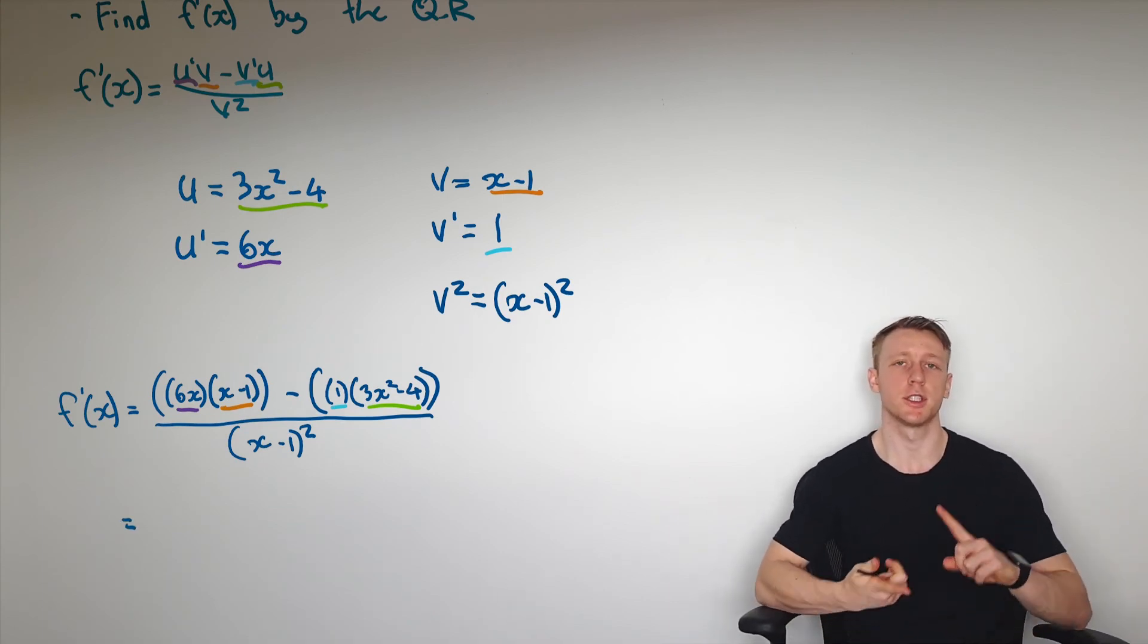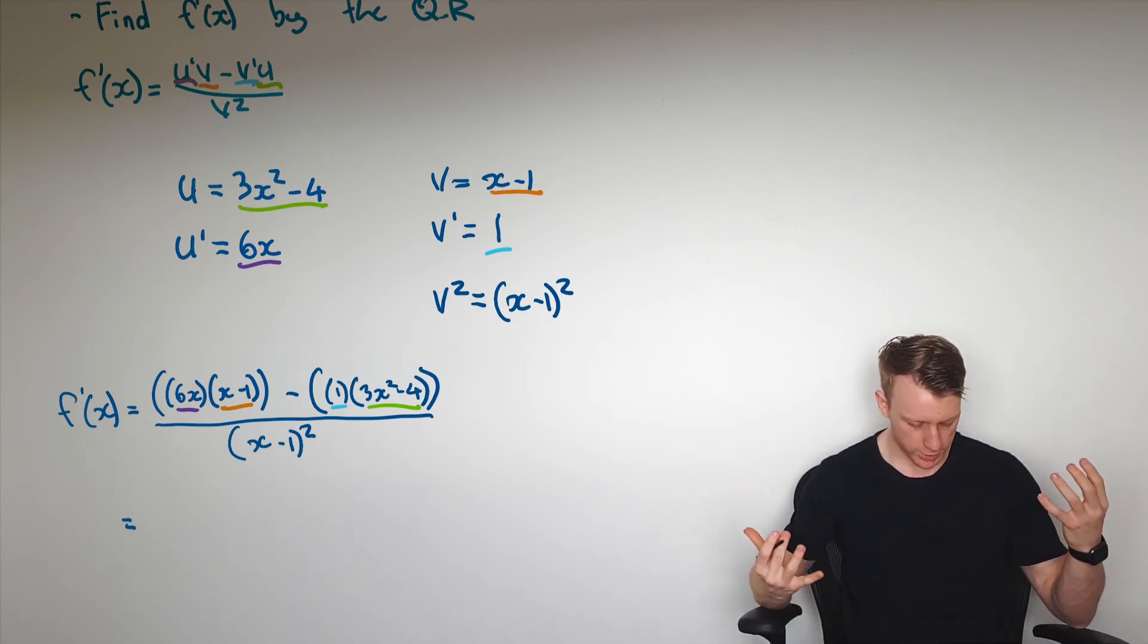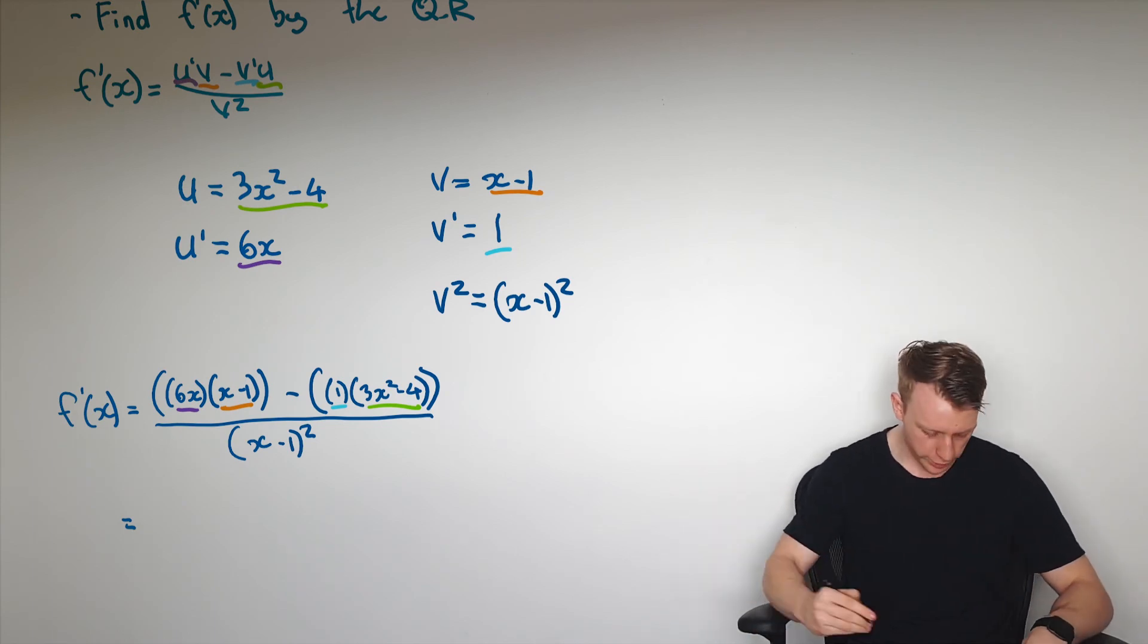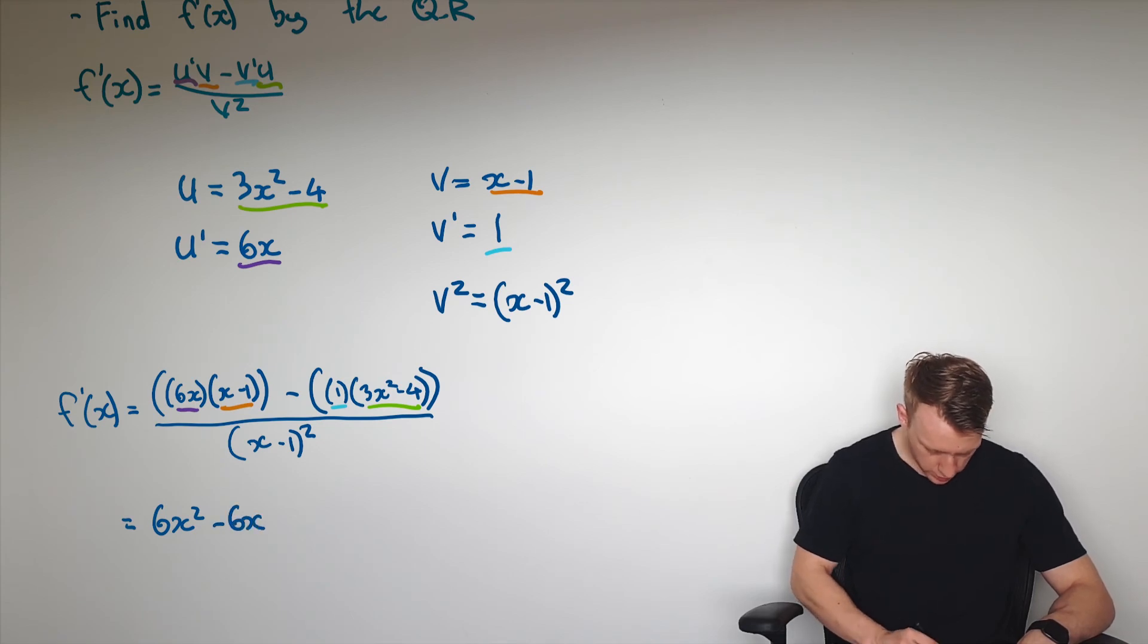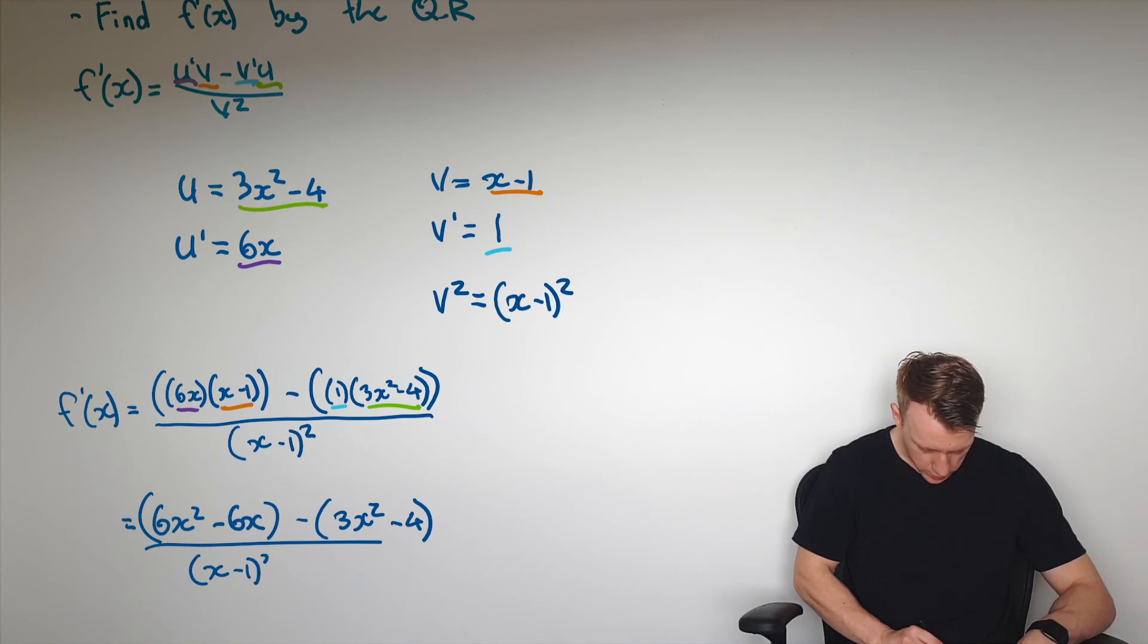And again, all I'm going to do is just expand brackets and simplify so I've got a nice clean expression for the derivative. Expanding brackets here, I get 6x² - 6x, subtract away 3x² - 4 over (x - 1)².